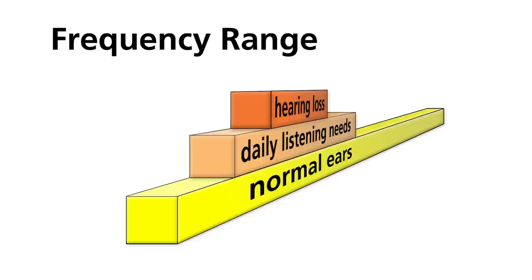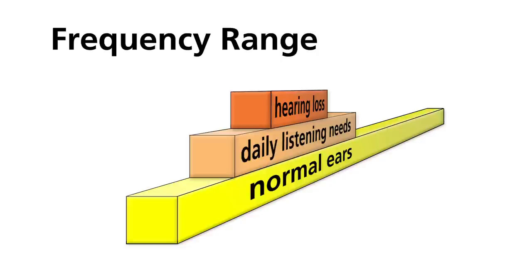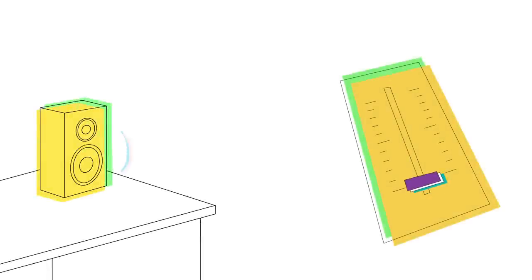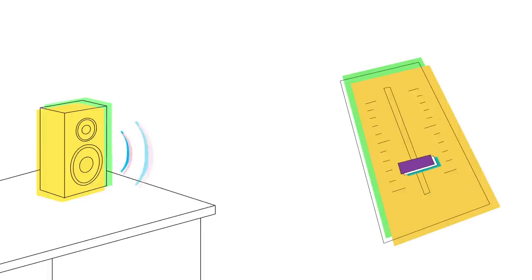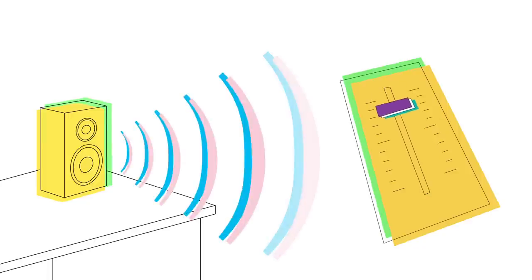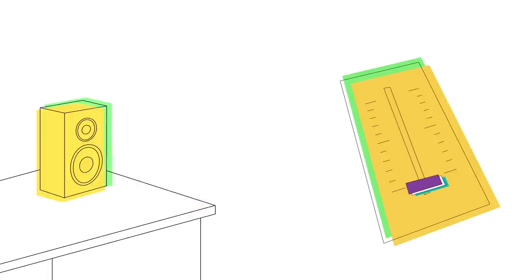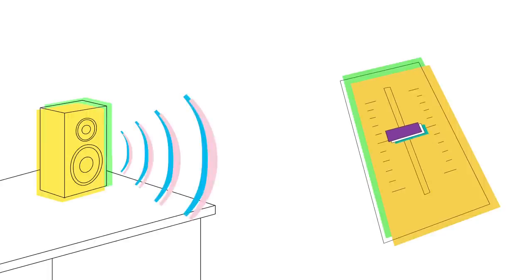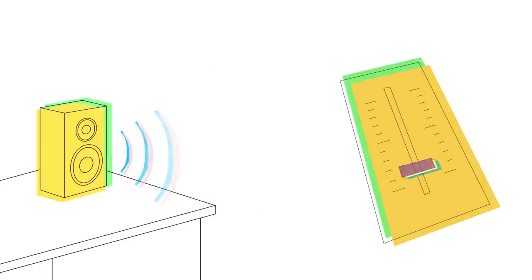A child with hearing loss may hear some sounds but not understand speech. In other words, a child may hear someone speaking but have difficulty understanding what is said. The normal ear can perceive very soft sounds to very loud sounds. The intensity range is from about 0 decibels to over 100 decibels. A child with a hearing loss loses the ability to hear soft, moderate, and sometimes even loud sounds depending on the degree of hearing loss.